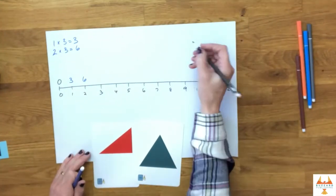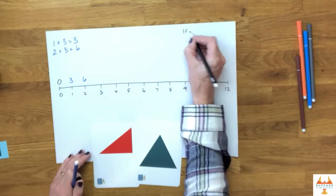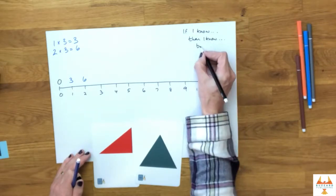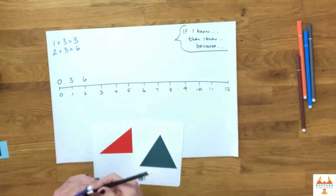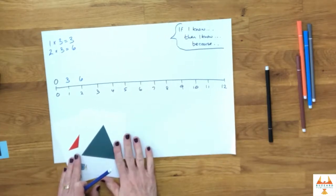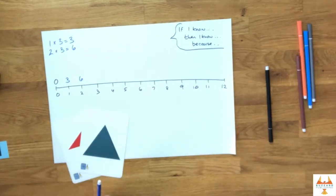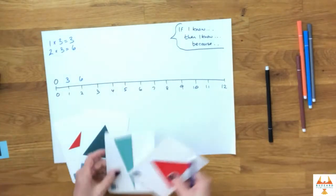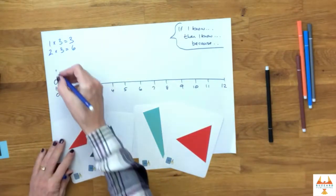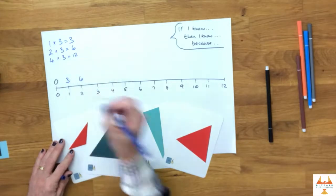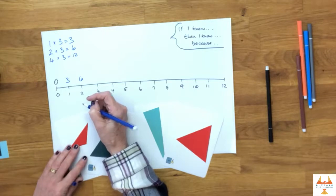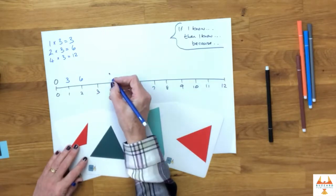We're going to carry on building the table now using the language of if I know something, then I know something else because. So the next step would be if I know that two triangles have got six sides and I double the number of triangles, then I know that four triangles will have 12 sides. So if I know two multiplied by three is six, then I know four multiplied by three is 12 because it's double.